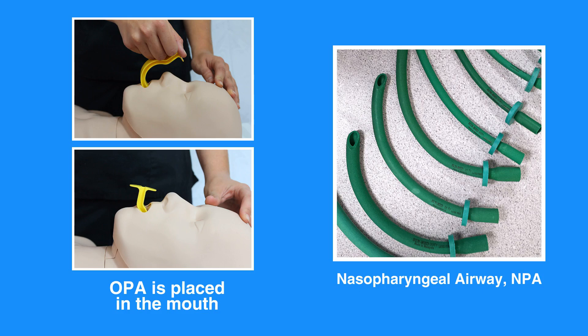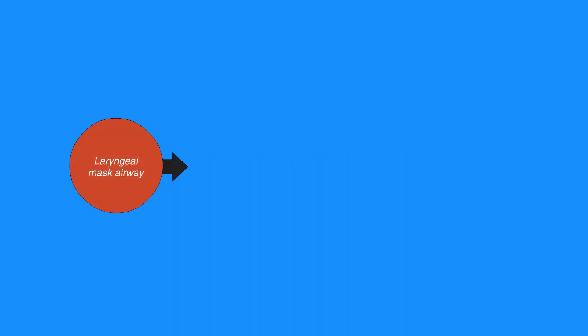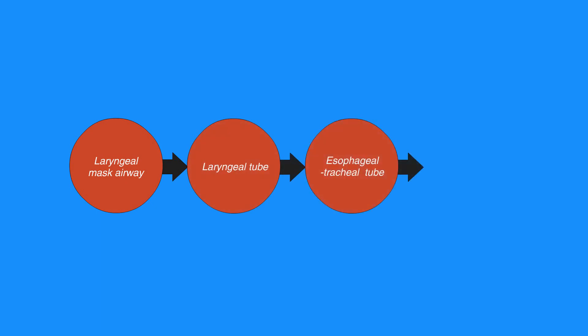The main advantage of an NPA over an OPA is that it can be used in either conscious or unconscious individuals, because the device does not stimulate the gag reflex. Advanced airway equipment includes the laryngeal mask airway, laryngeal tube, esophageal tracheal tube, and endotracheal tube. Different styles of these supraglottic airways are available. If it is within your scope of practice, you may use advanced airway equipment when appropriate and available.